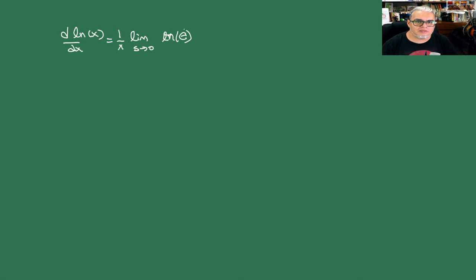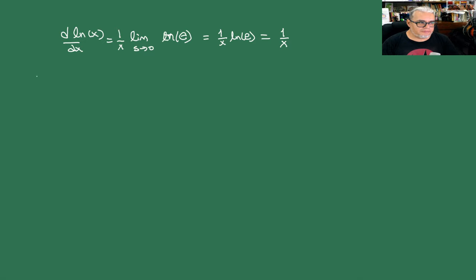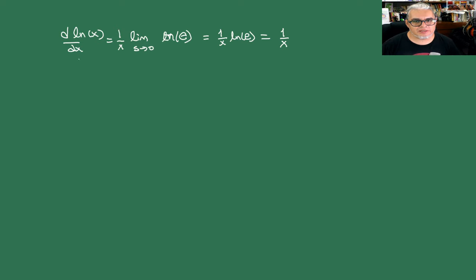Entonces el logaritmo del número e es 1, el límite ya no hace nada, y esto es igual a 1 sobre x. Ya tenemos que la derivada de la exponencial es la exponencial misma, y la derivada del logaritmo es 1 sobre x.